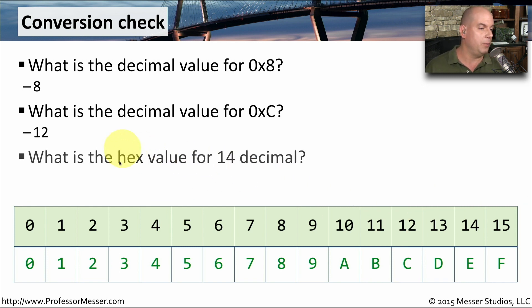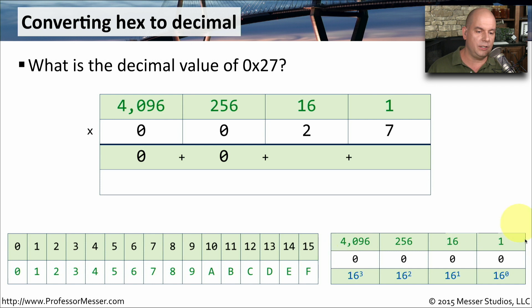And let's do the reverse. If we want to know the hex value for 14 decimal, we simply use our conversion chart to go down to 14, and we see that the hexadecimal value for 14 is 0xE. Now that we have our hexadecimal conversion chart and we understand the differences between the decimal numbers and the hexadecimal values, we can start performing some hexadecimal math.